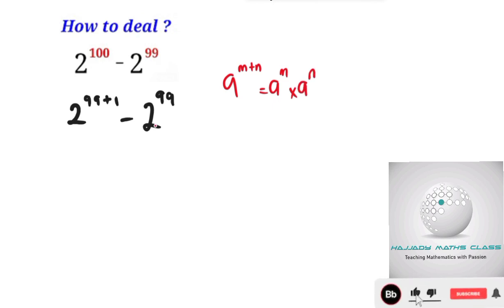So rewriting this using the same approach, this is the same thing as saying 2 to the power of 99 multiplied by 2 to the power of 1, minus 2 to the power of 99.